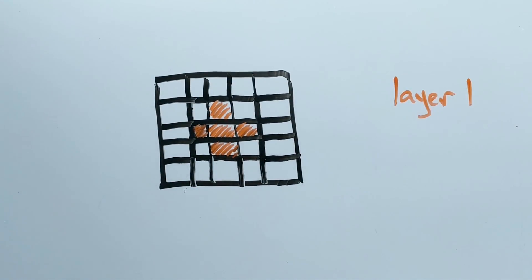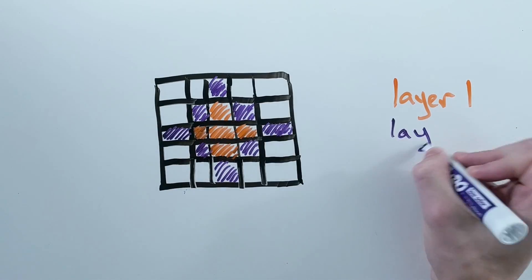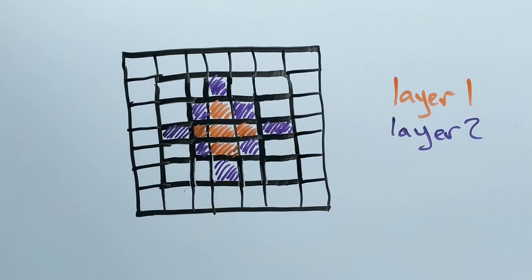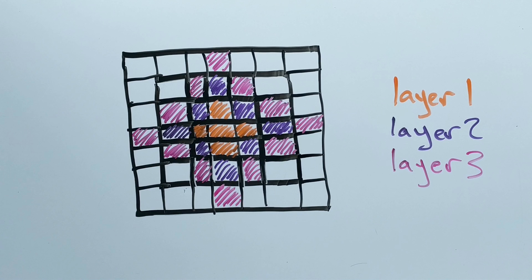So at the first layer, you get a cross, the second layer adds these values, and the third layer adds these values, and so on, and you get this really pretty pattern.